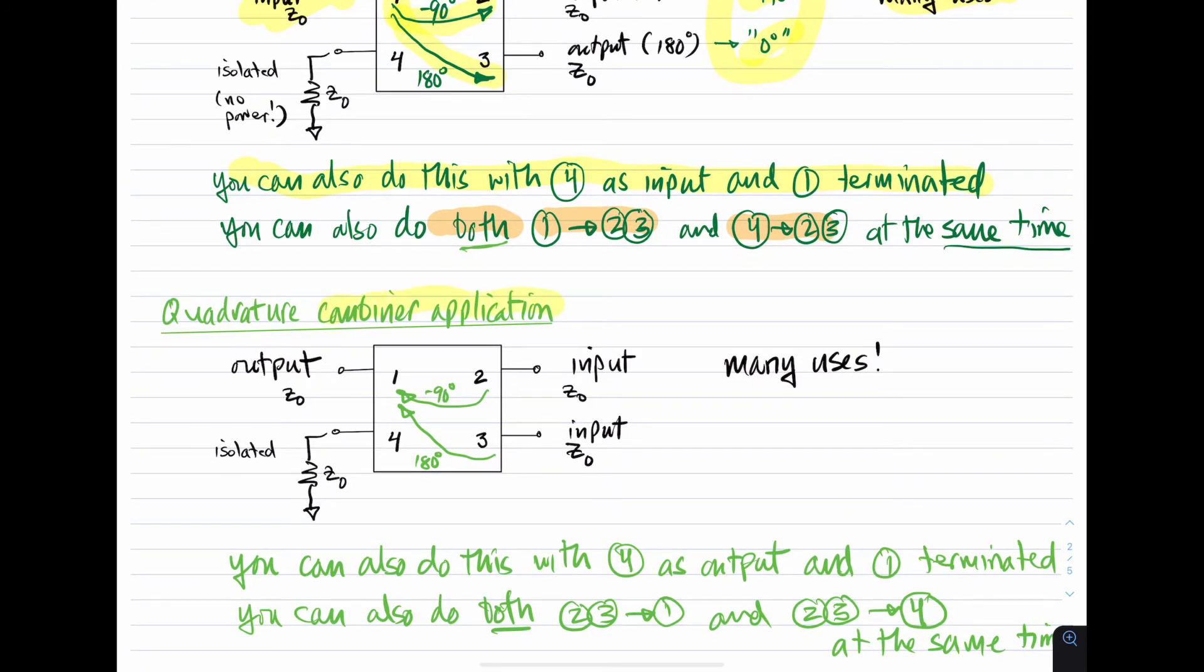When used as a combiner, this is the picture that you might think of. Here, ports two and ports three are the inputs. Port two gets a minus 90-degree phase shift and arrives at port one. The signal at port three gets a 180-degree phase shift and arrives at port one. And port four is isolated. We simply hang a resistor off of that.